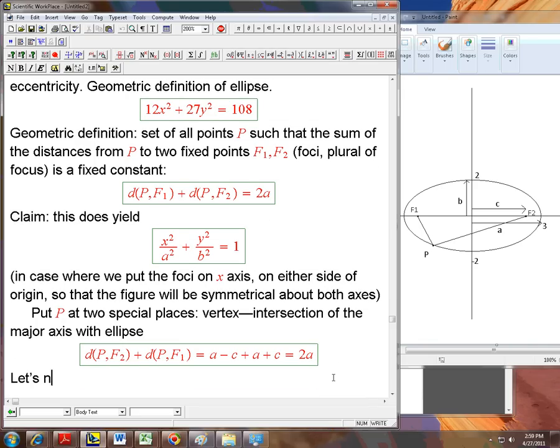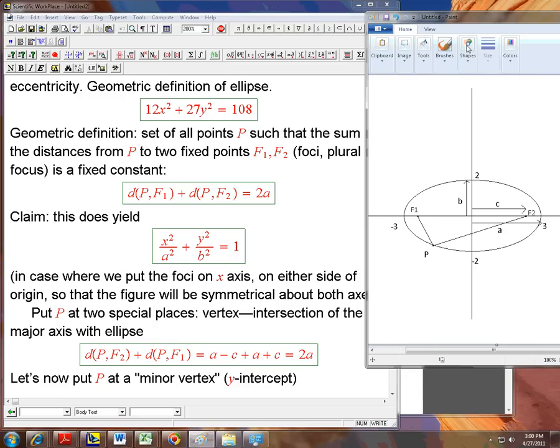So let's now put p at a, that's kind of an unofficial name, a minor vertex. It's not really what's called a vertex. In other words, in this case, the y-intercept, intersecting this minor axis with the ellipse. Now this distance we know is called b in terms of the equation description. How does that relate to the geometric description and how does that relate to the mysterious c, which is the foci? So we're going to put the p up here. Let's see if I can do that real quick. Draw a line here and a line here. Forget that blip. Ignore that blip.